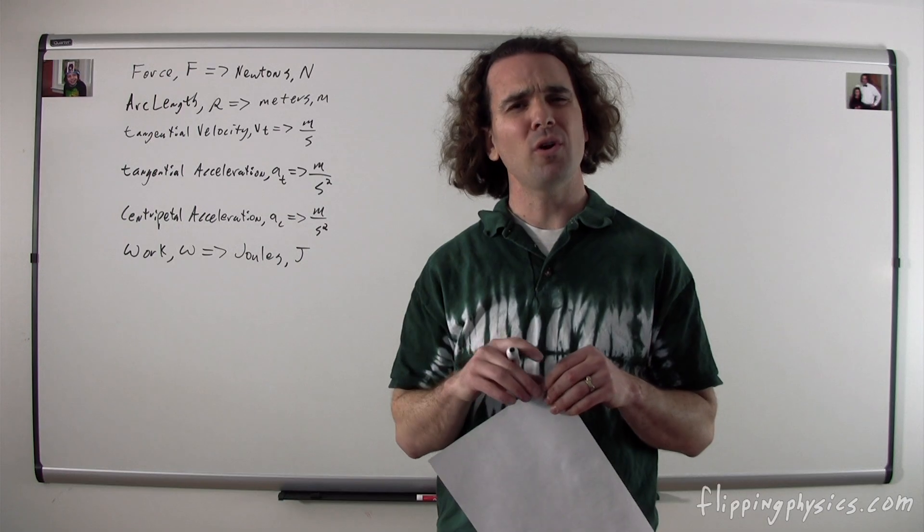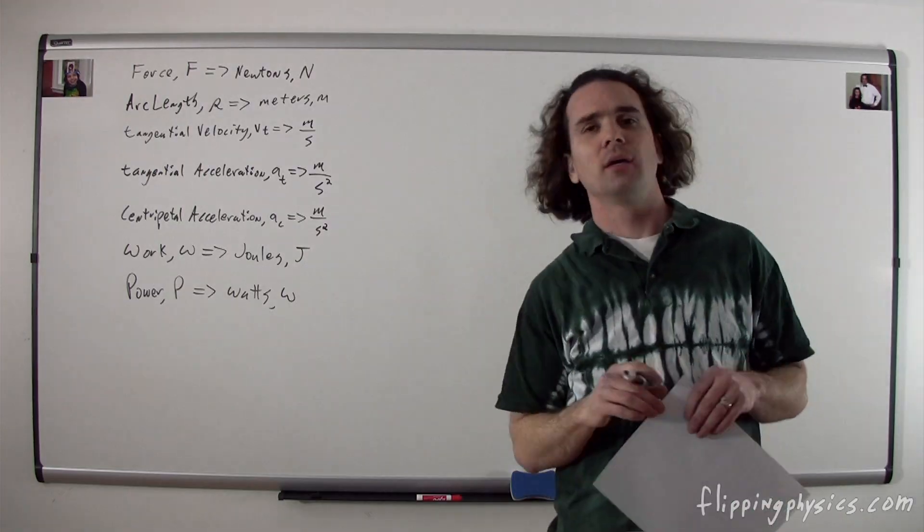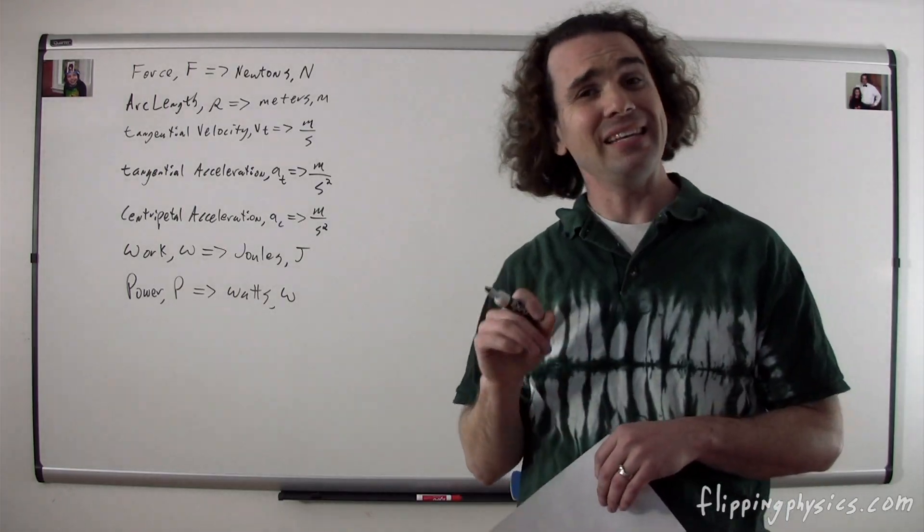Bo, what are the dimensions for power? Power is in watts. Bobby, what is a watt? A watt is a joule per second, and a joule is a newton meter, and a newton is a kilogram meter per second squared. Very nice, Bobby.